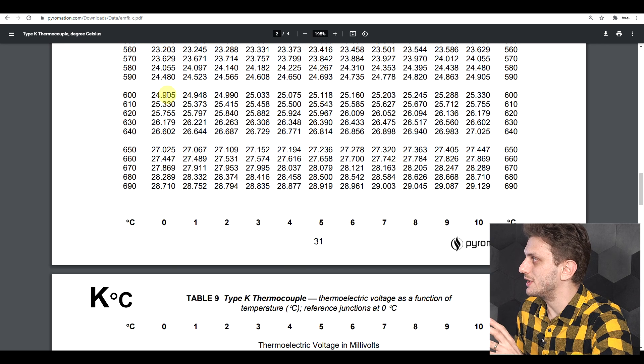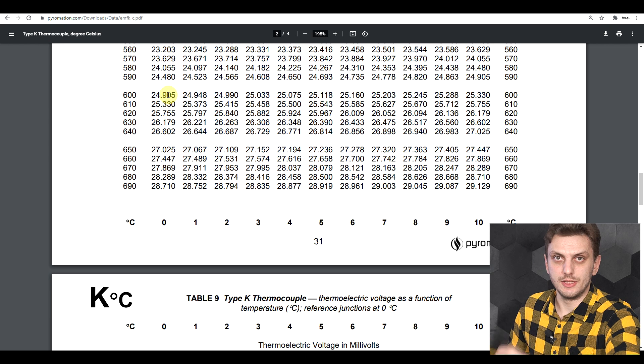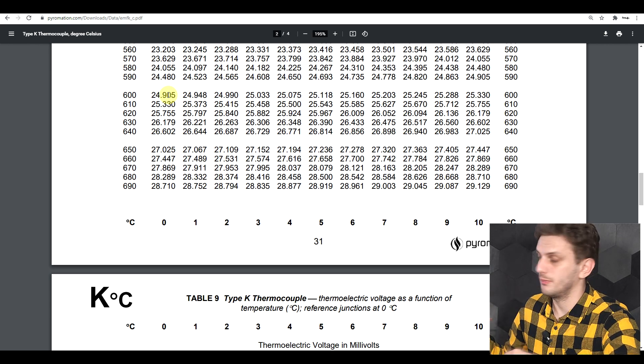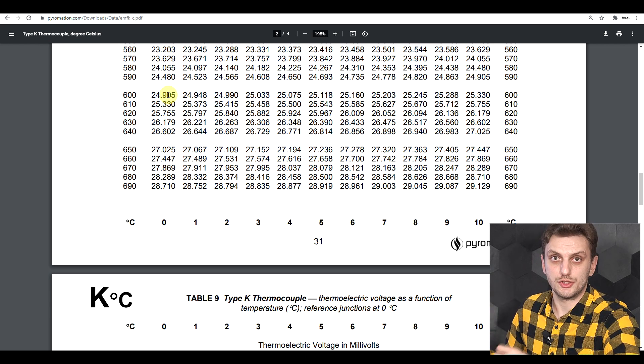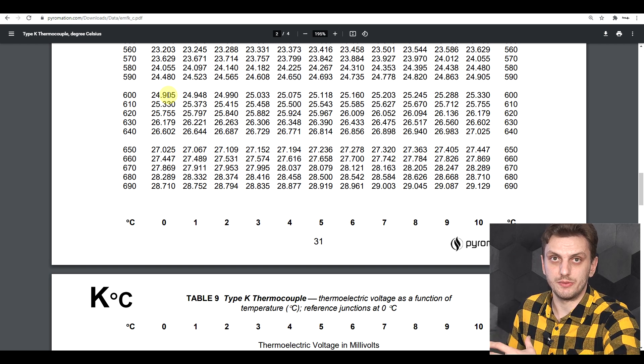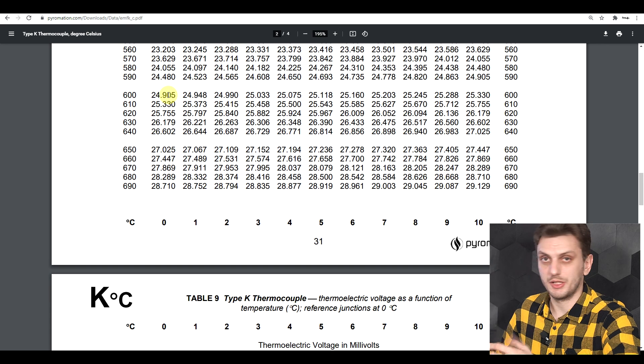While this variation isn't constant, so the probe doesn't have a perfectly linear response, regardless, because the value is so small, you will almost always definitely need some sort of amplification to actually measure this value.